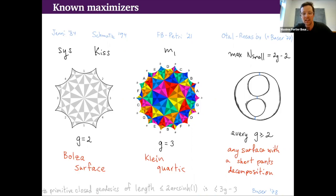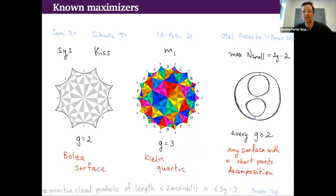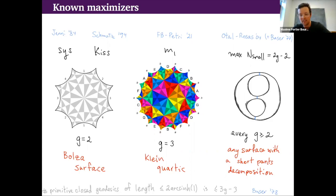For the number of small eigenvalues, there's a theorem of Otal and Rosas saying it's always at most 2g minus 2. An older construction of Buser shows this value 2g minus 2 can be achieved: if you have a hyperbolic surface with a short pants decomposition — a maximal collection of disjoint simple closed curves cutting the surface into pairs of pants — then if the cuffs are short enough, you get 2g minus 2 small eigenvalues, all smaller than any positive epsilon. This value is achieved in every genus by surfaces with a short enough pants decomposition.